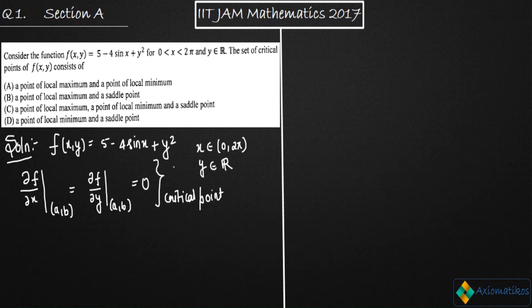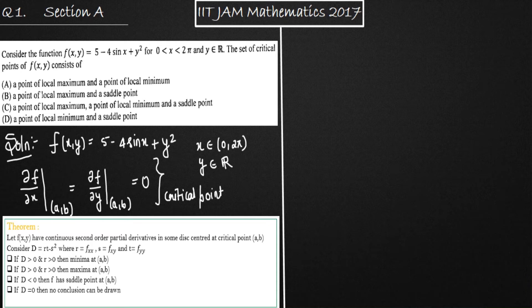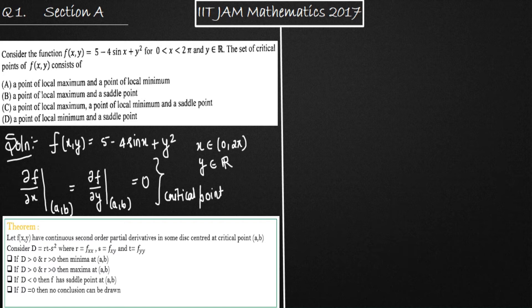We need to talk about the maxima and minima of a two-variable function. I will show you a theorem regarding maxima and minima for a two-variable function. The theorem states: let f(x,y) have continuous second-order partial derivatives in some disk centered at the critical point (a, b). Consider D = rt − s², where r = ∂²f/∂x², s = ∂f/∂x∂y, and t = ∂²f/∂y².